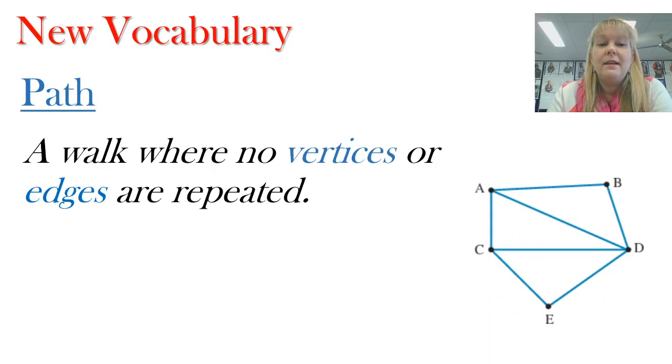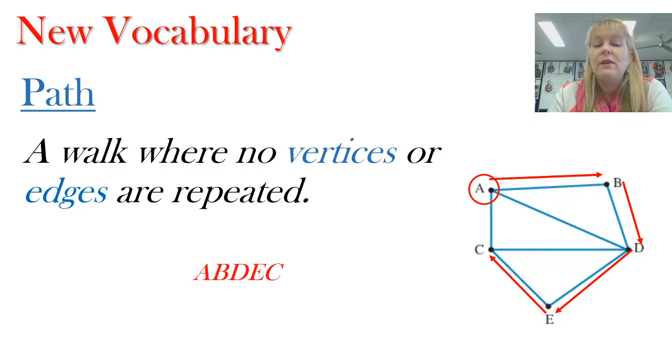Now a path is a walk where I don't repeat any edges or vertices so this is quite important. You can see that we're stepping up with the little conditions that we're putting on each of these different kinds of walks through the network and this is another example of a path going from A to B to D and then to E and then C. So notice I haven't repeated any of those vertices. I haven't used every edge but I didn't repeat anything. That's the key point here that we don't have to use all the parts of the network just as long as we don't repeat anything.